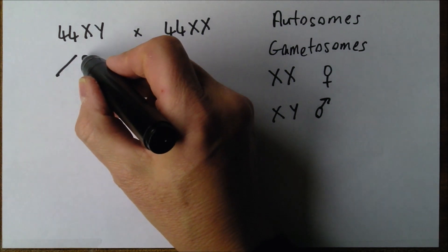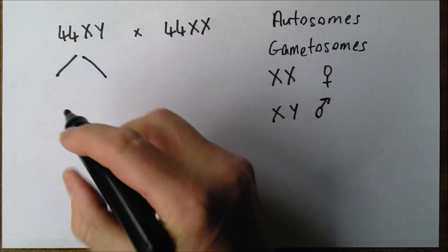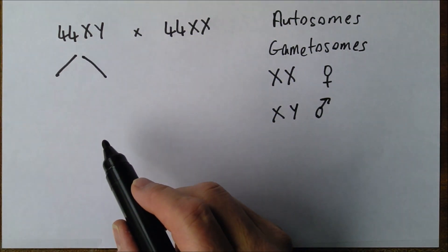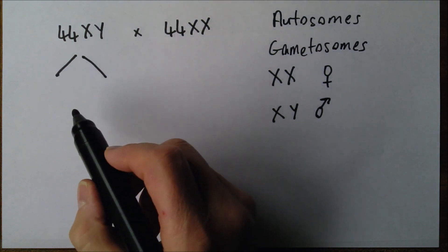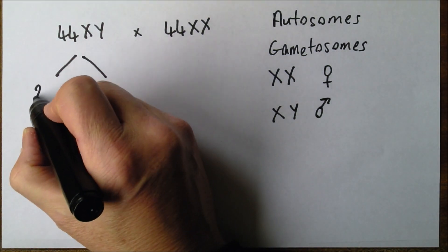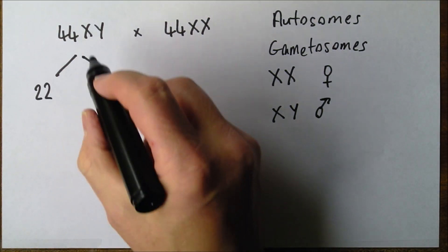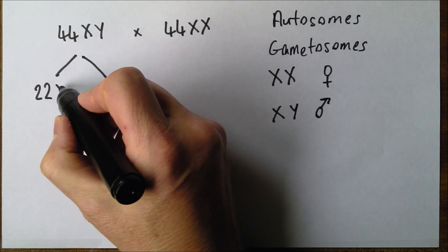Now of course, in order to reproduce, the man must first make sperm, and we need 23 pairs of chromosomes in each sperm. So that's 22 autosomes, and we're going to get an X or a Y. In this case, it's an X.